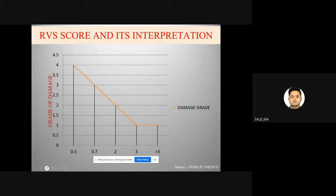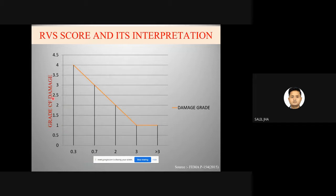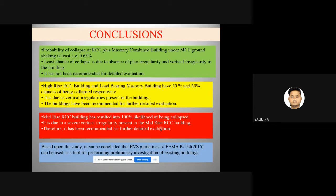RVS score interpretation: corresponding to each RVS score, there are certain grades of damage associated. For example, if the RVS score is around 2.3, Grade 2 damage is certain, while Grade 1 damage can be seen in some buildings with a similar RVS score. In conclusion: the least chance of collapse was in the RCC plus masonry combined building under MCER shaking, due to the absence of plan and vertical irregularities — no detailed structural evaluation was required.